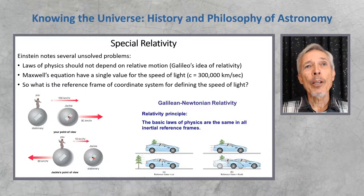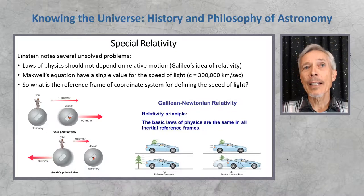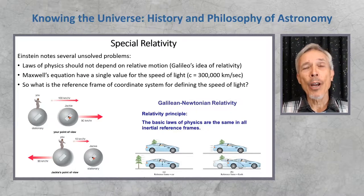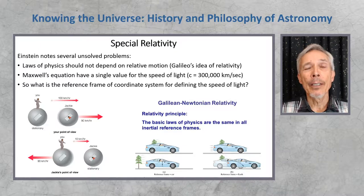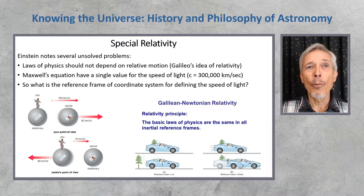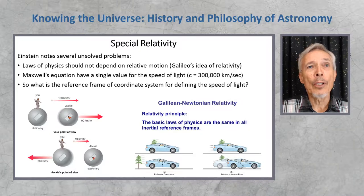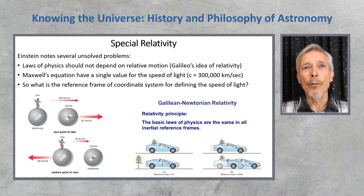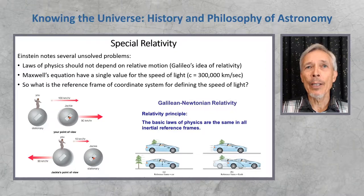In special relativity, Einstein attacked and solved several important problems from physics of the 20th century. Laws of physics should not depend on relative motion. This is Galileo's idea of relativity. In constant uniform motion or at rest, the laws of physics should appear the same to an experimenter. But Maxwell's equations for light and electromagnetic radiation have a single value in the speed, 300,000 km per second.